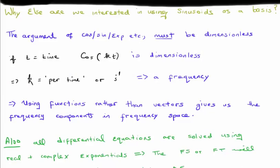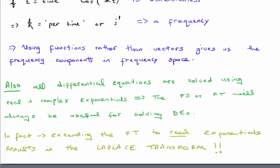The other reason we are interested in using sinusoids as a basis is that their argument must be dimensionless. So where we have an input function of time, let's say, this means that k must be of unit per second. It is a frequency. If the input function is one of position, then the output function, or the k, would be of spatial frequency. So using functions rather than vectors gives us access to the frequency components in frequency space.